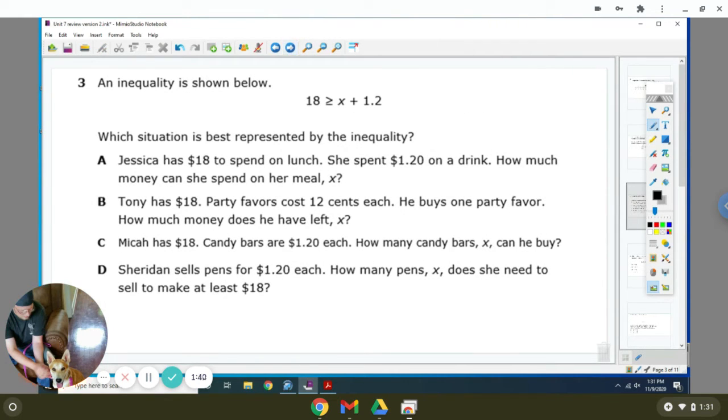An inequality is shown below: 18 is greater than or equal to x plus 1.2. Which situation is best represented by the inequality? Jessica has $18 to spend on lunch. She spent $1.20 on a drink. How much money can she spend on her meal? That's actually pretty good, because $18 is her total. You can't spend more than $18, but you can spend up to $18.